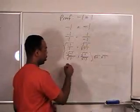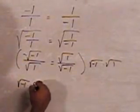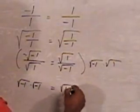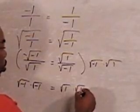And what we'll have is the square root of negative 1 times the square root of negative 1. And that's going to equal the square root of 1 times the square root of 1.